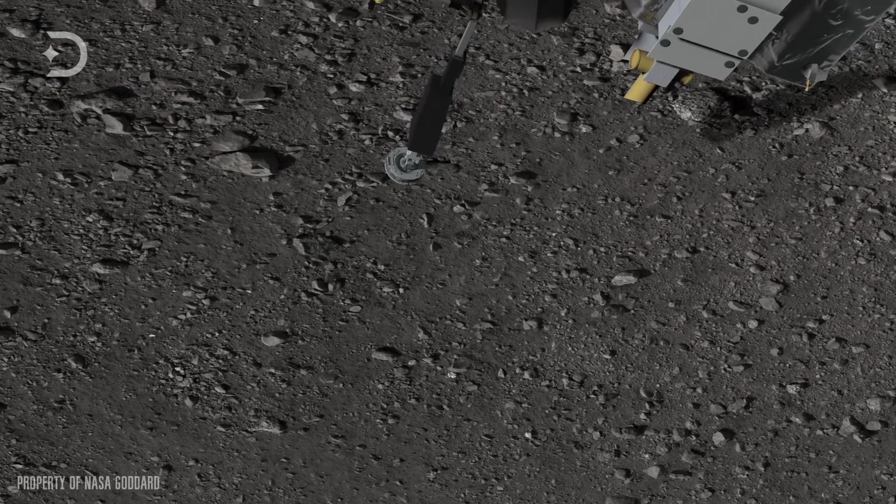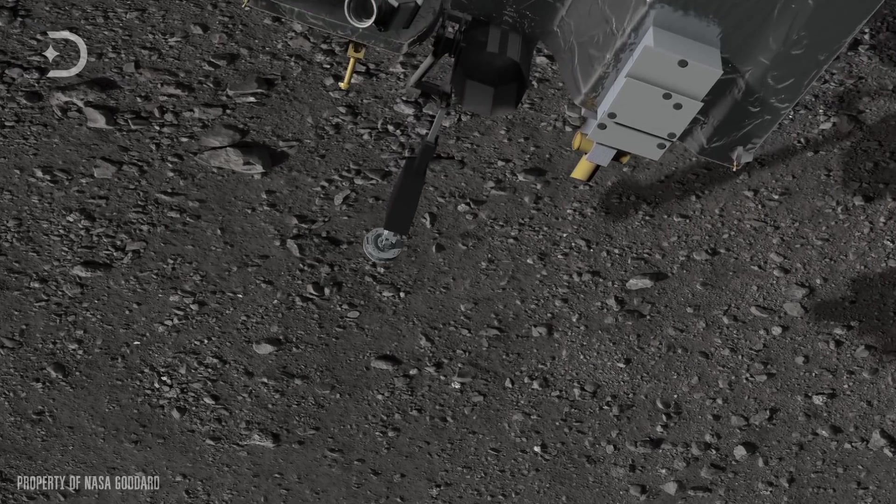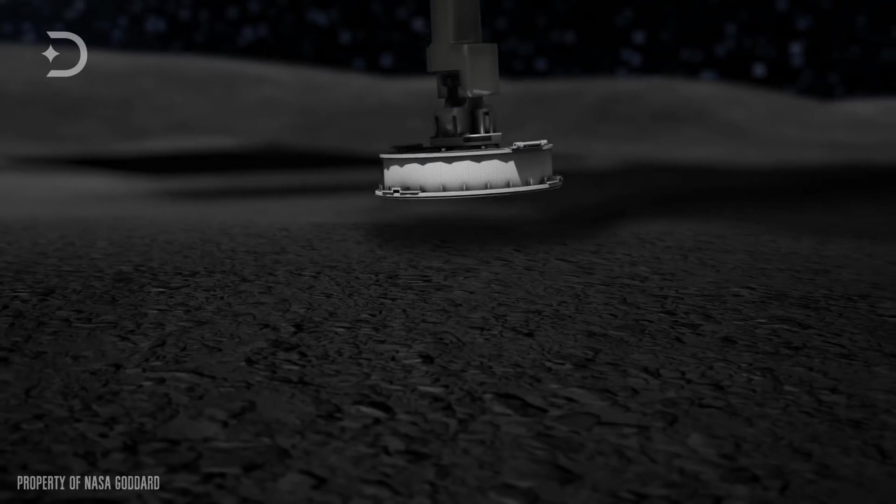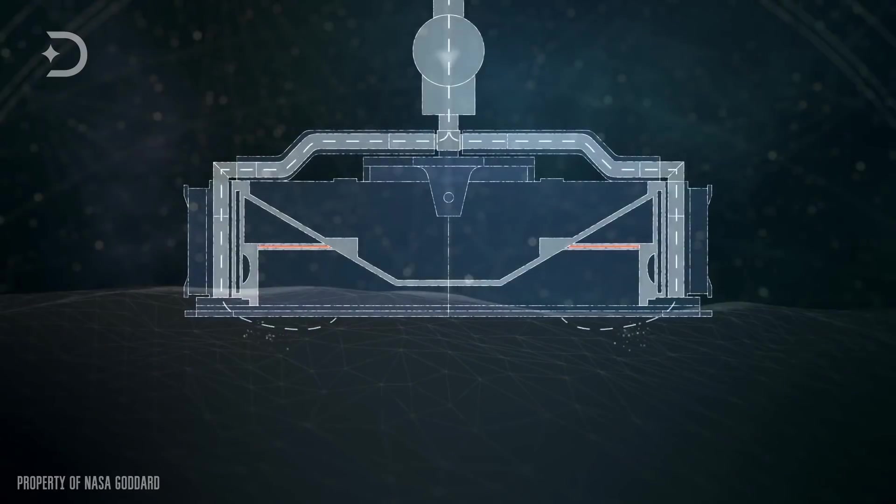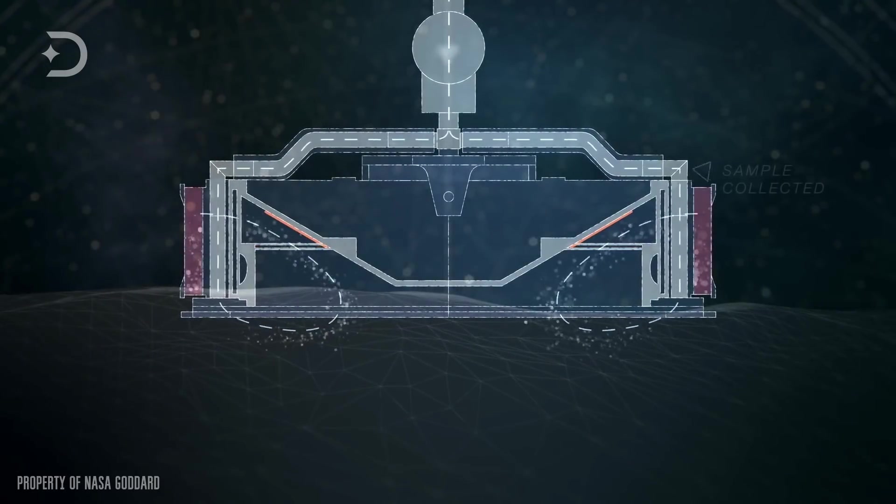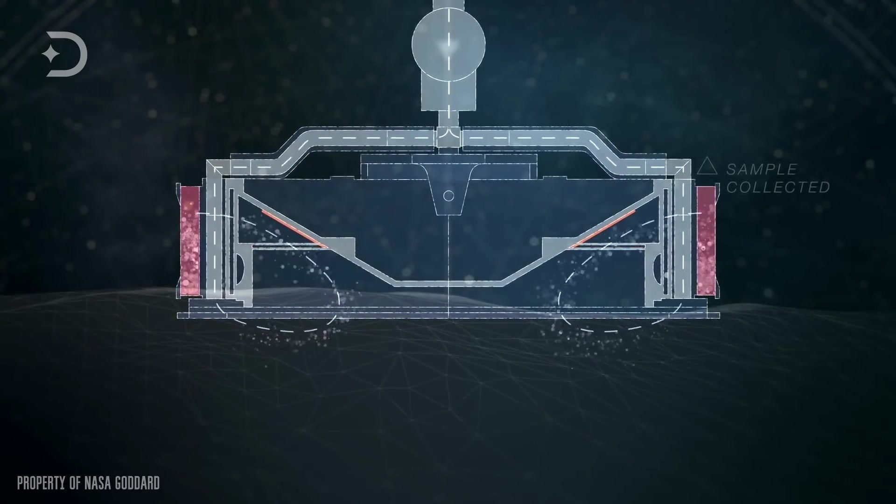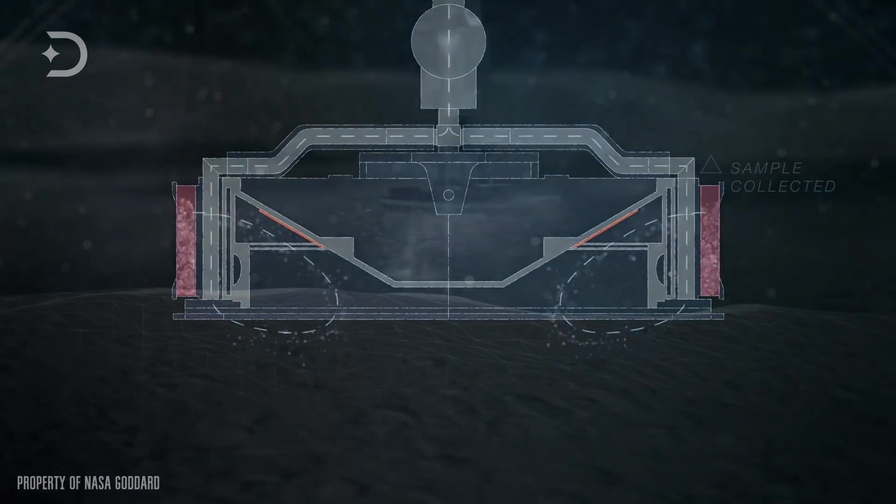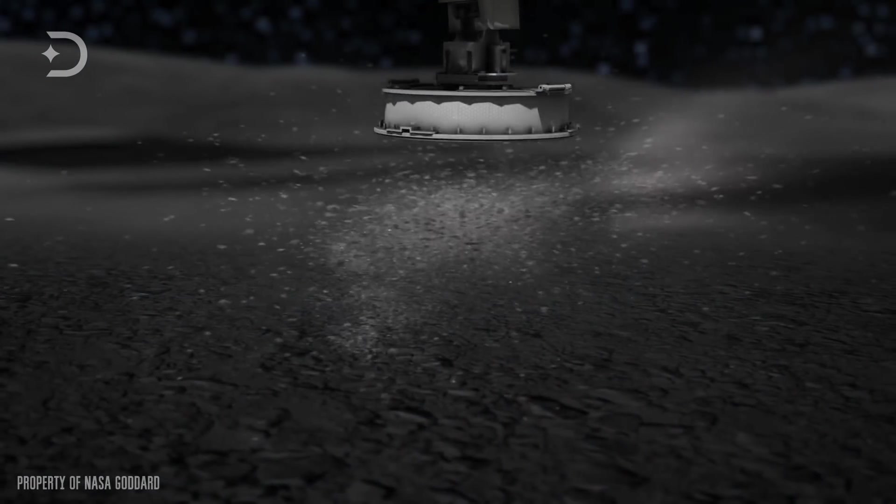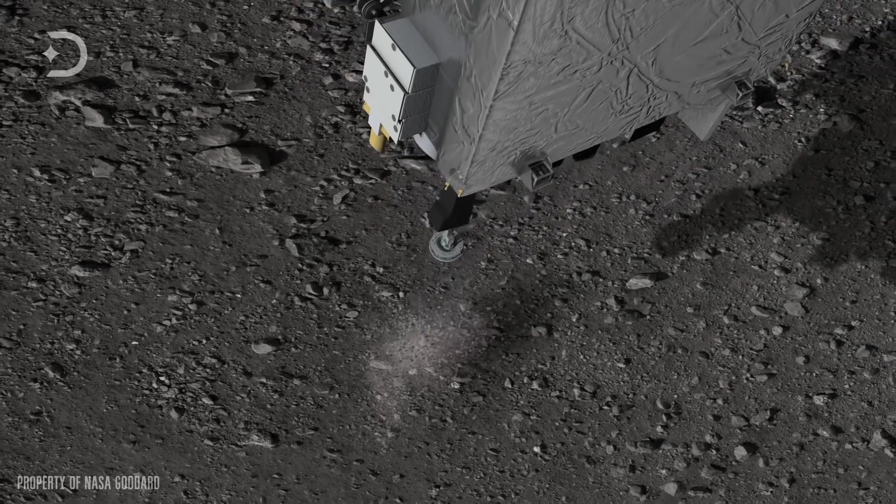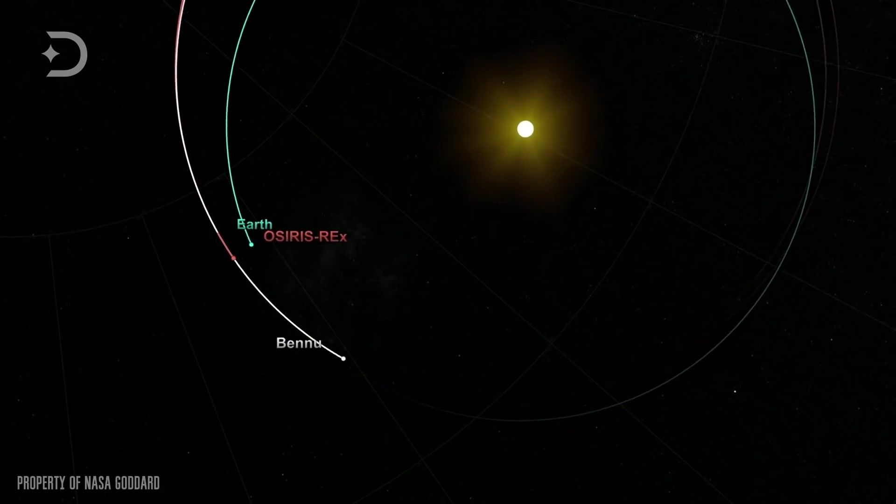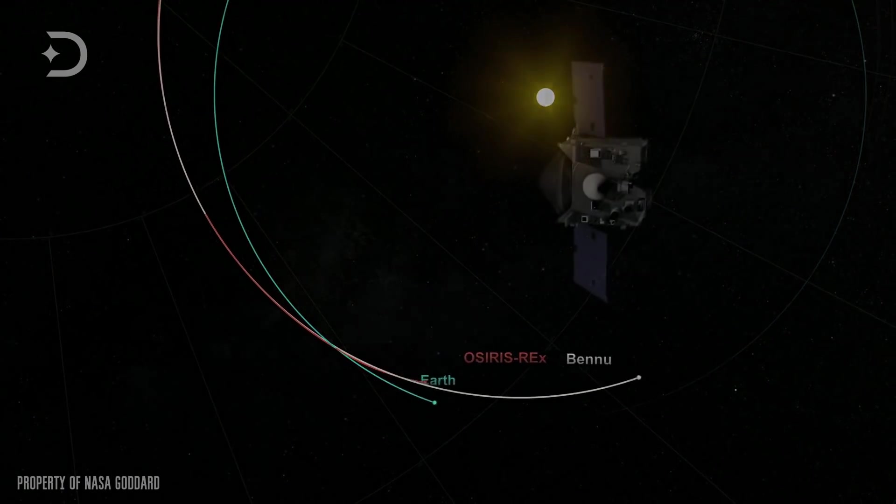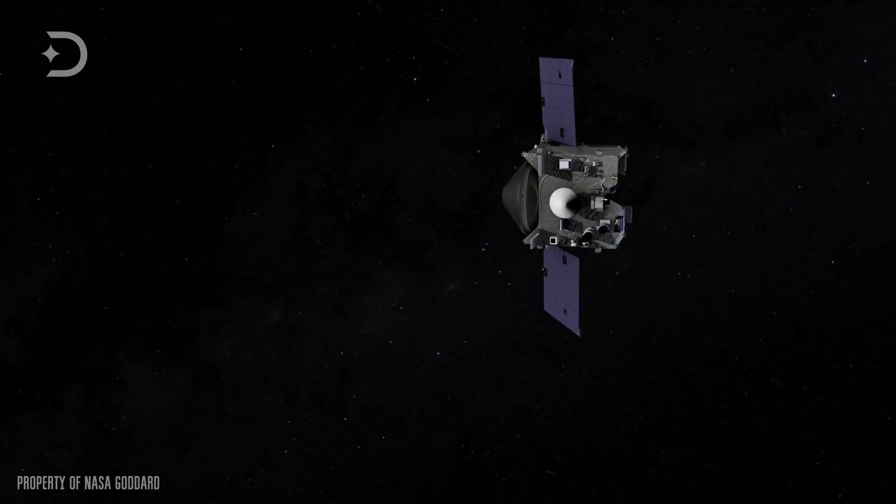OSIRIS-REx aims to collect at least two ounces of dust and gravel from Bennu, the first such attempt by the U.S. after a smaller mission to another asteroid by Japan. But OSIRIS isn't going to land on the asteroid. Instead, it will use a 10-foot arm to collect a sample from the surface in 2020. Thrusters will shoot out nitrogen gas to stir up particles which will then be sucked up by the arm. NASA gets just three shots at doing this until the nitrogen gas will be depleted and the effort abandoned.